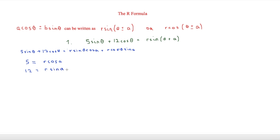This is where we have to use a bit of trigonometry. We say that r sin a over r cos a is equal to tan a, so tan a is equal to 12 over 5. Solving that by doing tan⁻¹(12/5), a is equal to 67.4 degrees.